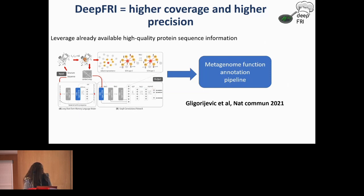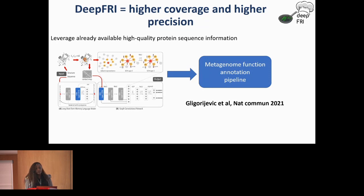DeepFRY was developed by our collaborators from the Flatiron Institute. This method takes as input protein sequence and structure, where protein structure is represented as a network of interactions known as contact maps. It uses this structure and sequence to create embeddings, and the model is trained to identify short-range interactions within protein residues and long-range interactions defined by protein structure, to learn structure-function relationships.